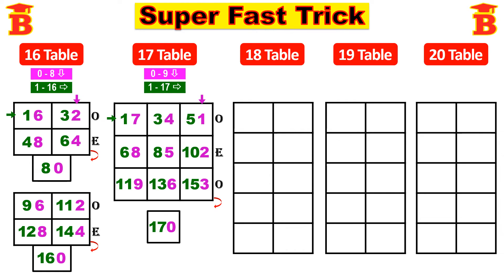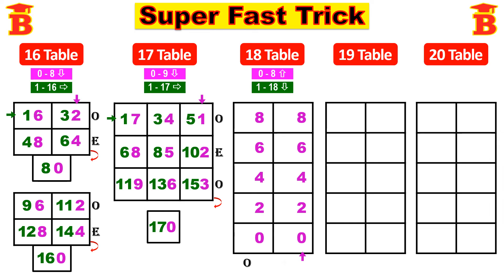Next let us see the 18th table. First step: write even numbers 0 to 8 from the bottom. So from bottom enter the even numbers 0, 2, 4, 6, 8. Again repeat that: 0, 2, 4, 6, 8. Next second step: enter 1 to 18 — first column odd numbers, second column even numbers. See the arrow mark and enter the numbers. Odd numbers 1, 3, 5, 7, 9. Next column, even numbers: 10, 12, 14, 16, 18.